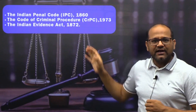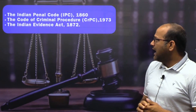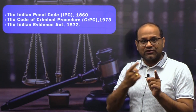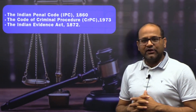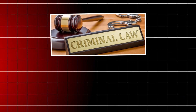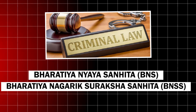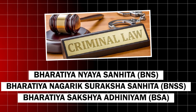These three laws have been revised — their names have been changed and many amendments have been brought in. The Indian Penal Code (IPC) 1860, the Code of Criminal Procedure (CrPC) 1973, and the Indian Evidence Act 1872 have been replaced by three new criminal laws: Bharatiya Nyaya Sanhita (BNS), Bharatiya Nagarik Suraksha Sanhita (BNSS), and Bharatiya Sakshya Adhiniyam (BSA).